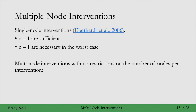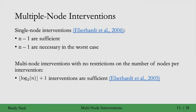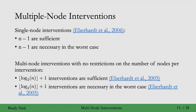What if we could intervene on more than one variable at once, with no restrictions on the number of nodes per intervention? One intervention specifies a set of variables to intervene on, then another intervention specifies another set of variables to intervene on — it's a sequence of sets of interventions. In that case, the floor of log base 2 of n plus 1 interventions are sufficient, so we roughly only need the logarithm of the number of variables to identify the causal graph.